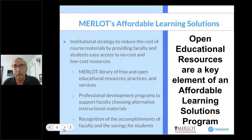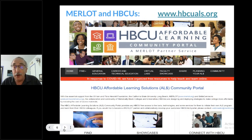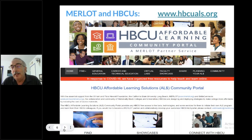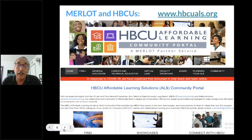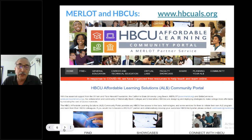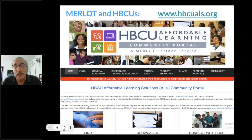When contextualizing affordability for diverse students, in the California State University, 20 of our 23 campuses are Hispanic Serving Institutions, and 15 are Asian American, Native American Pacific Islander Serving Institutions. In the U.S., we also have Historically Black Colleges and Universities, and with support from the Hewlett Foundation, we've built a portal to bring not only free and open materials, but materials more relevant for specific diverse student populations.